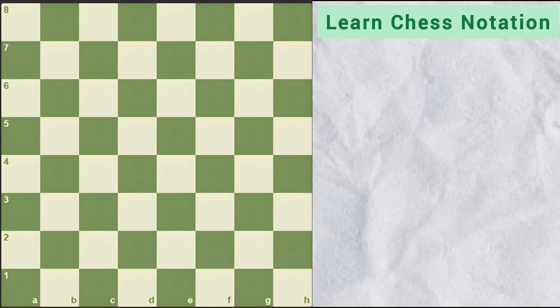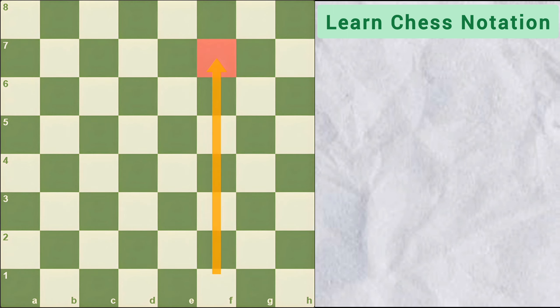Let's learn this with the help of example. This square is in the F file and is on the rank number 7. So this square will be called as F7 square.